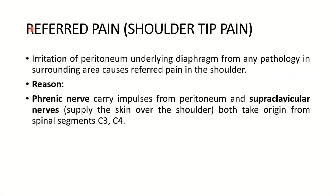Let's discuss this very important point: referred pain and the shoulder tip pain. Irritation of the peritoneum underlying the diaphragm from many pathologies in the surrounding area causes referred pain in the shoulder. The reason is the phrenic nerve — it carries impulses from the peritoneum — and the supraclavicular nerve supplies the skin over the shoulder. Both take origin from the spinal segments C3 and C4, which is also the spinal supply of the diaphragm.